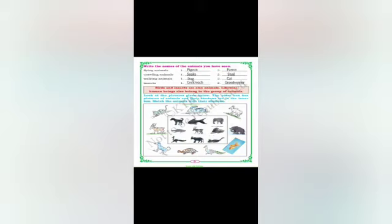One more activity has been given for you to do on your own. Here are some more posters with shadows. Look at the picture given below — the outer box has pictures of animals and their shadows are in the inner box. Match the animal with their shadow.